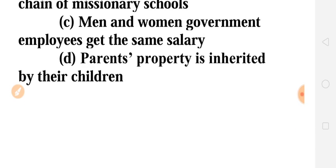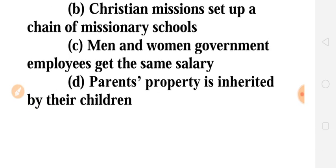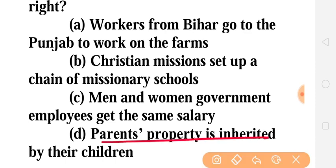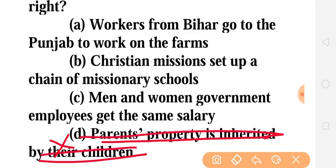The answer is D: parents' property is inherited by children. Is it necessary that parents' property is inherited by children? It is not necessary. If parents give it to the child, then it will happen. If parents don't want to give it to the child, they don't have to. So this is not our fundamental right, because the right to property is not our right.